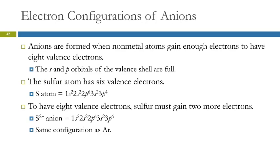Anions are formed when nonmetal atoms gain enough electrons to get eight valence electrons. So the S and P orbitals of that valence shell are full. If we look at sulfur as an example, sulfur has six valence electrons. Here's its electron configuration. It ends in 3S2, 3P4. To get eight valence electrons, it has to add two to this 3P sub-level. Then it's got 1S2, 2S2, 2P6, 3S2, 3P6. So now it has a total of eight valence electrons, two plus six. And that gives it a negative two charge. This electron configuration is exactly the same as argons.